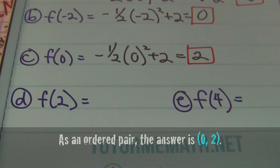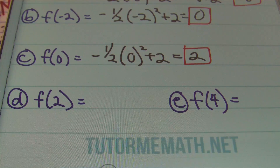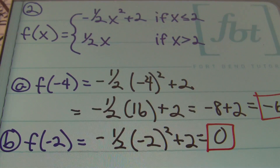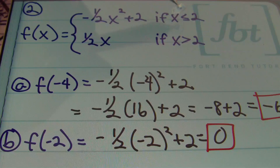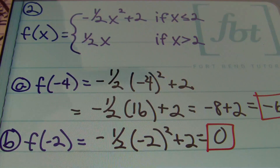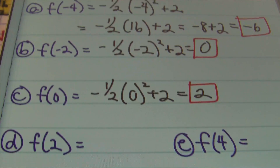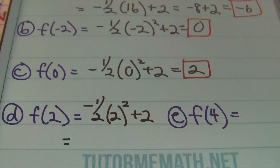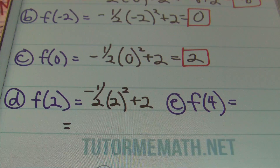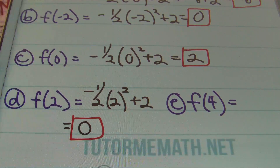For part d, x equals two. Our condition says to use the first part whenever x is less than or equal to two, and the second part whenever x is greater than two. Since x equals two, we use the first part: negative one half times two squared plus two. Two squared is four, negative one half times four is negative two, and negative two plus two equals zero.